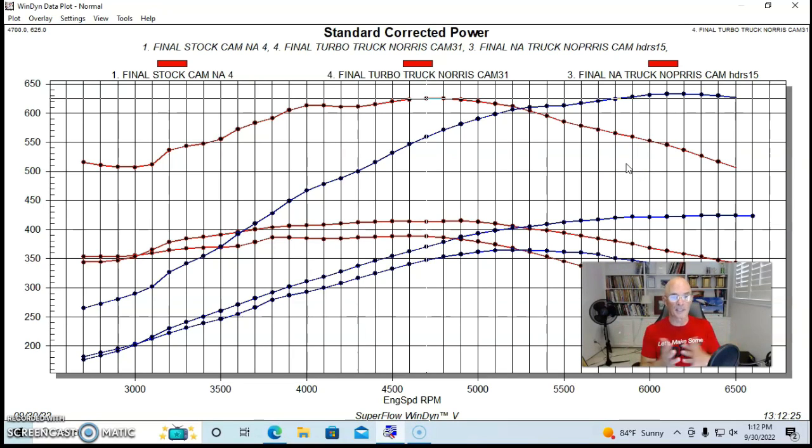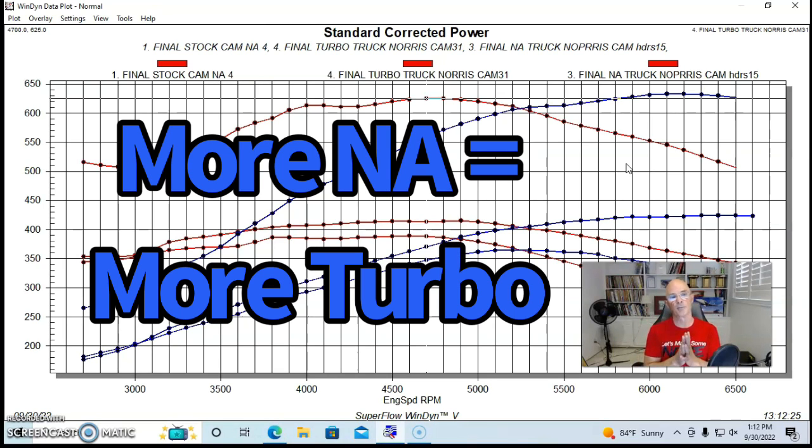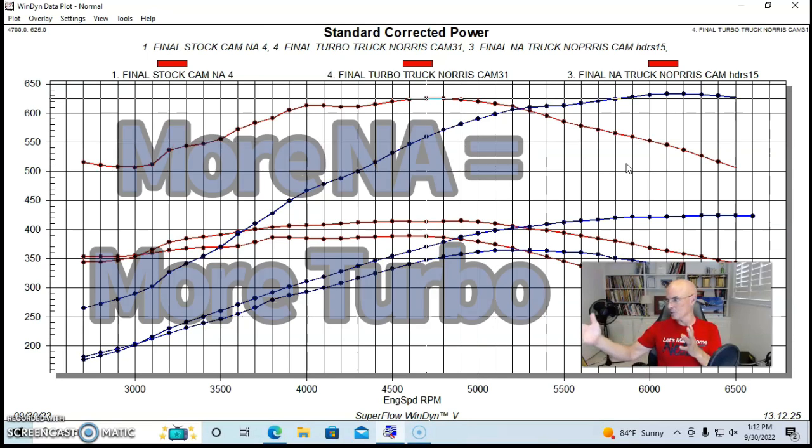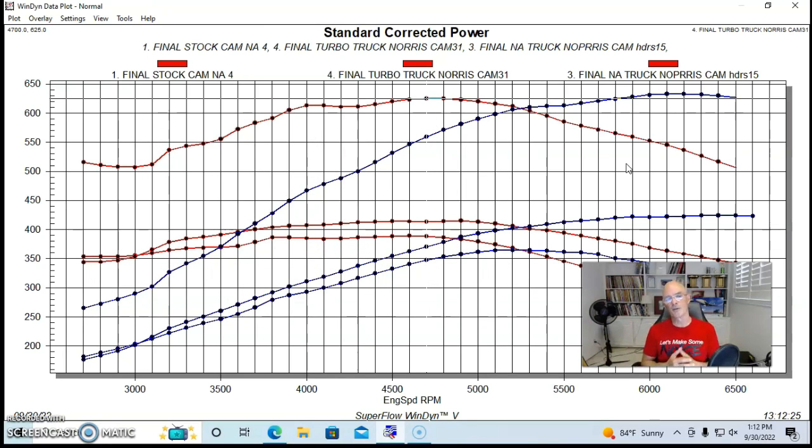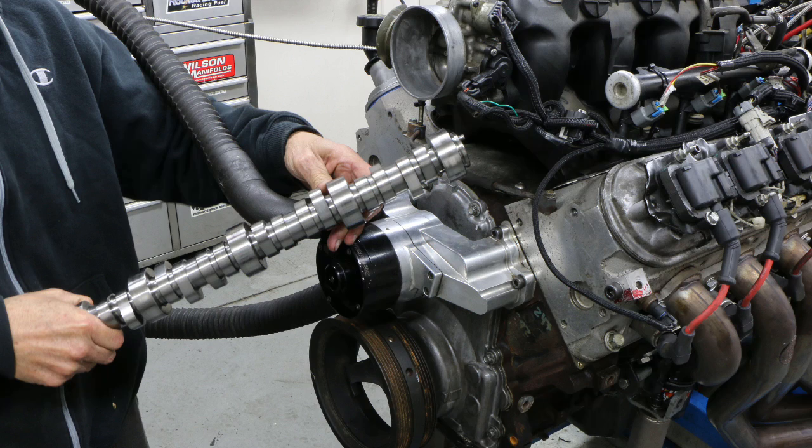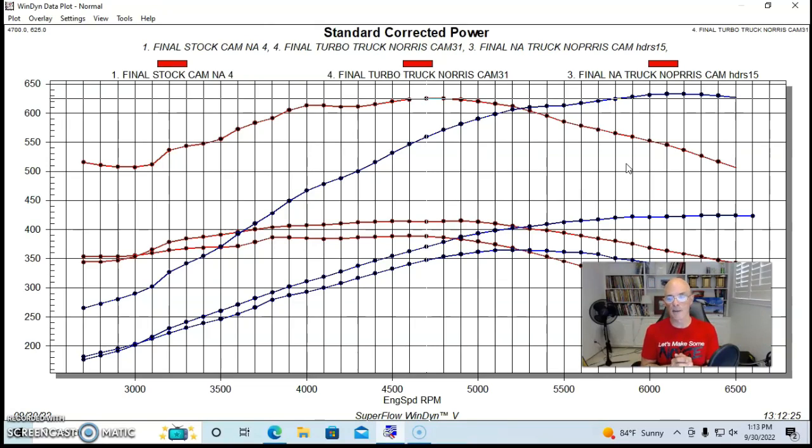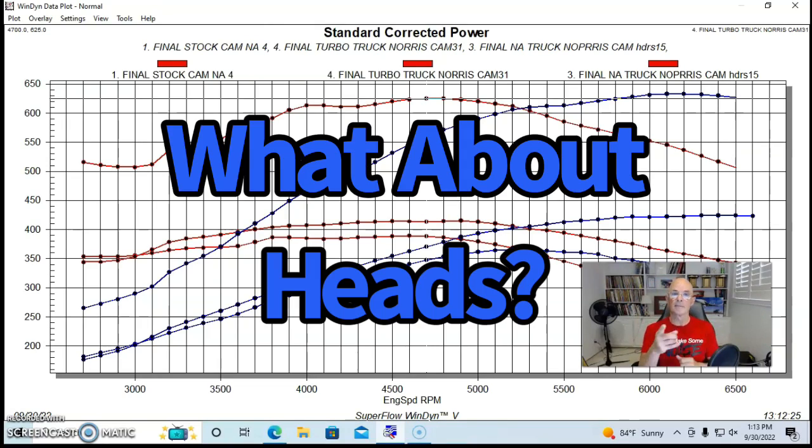And the same thing happens if we, anything that we do to upgrade the naturally aspirated power, which would include some ported cylinder heads would include other intake manifolds. I've shown when we run short runner intake manifolds, what it does when we run long runner intake manifolds, lots and lots of intake manifold tests up and also cylinder head stuff. So if we improve the power output of our naturally aspirated motor, we're going to get good gains whenever we add boost, which is why we always tell you, you need to put a camshaft in it. But the question remains is at what point should we start thinking about porting the heads?